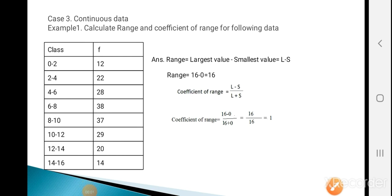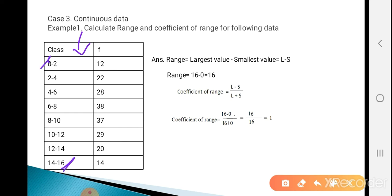For continuous data, we are given classes along with their frequencies. The formula is still L − S. The largest value is 16 and the smallest value is 0, so range = 16 − 0 = 16. Coefficient of range = (16 − 0) / (16 + 0) = 16 / 16 = 1.